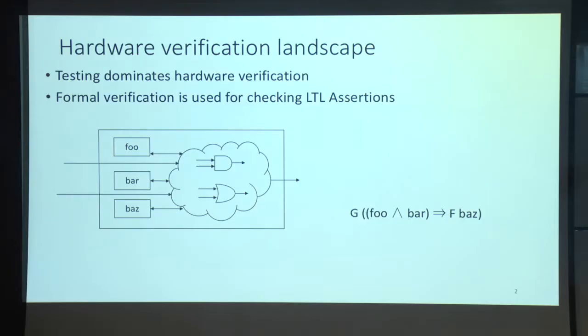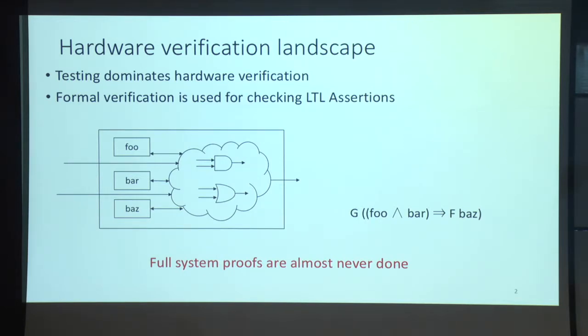For instance, if you have the system shown in the figure containing three registers — foo, bar, and baz — you can write assertions of the form: if foo and bar are both true, then eventually baz will become true. You can very easily verify such assertions. But you don't have any tool currently in the industry which does full system proofs, so you cannot specify the full system property in any meaningful manner, other than in the form of various assertions.